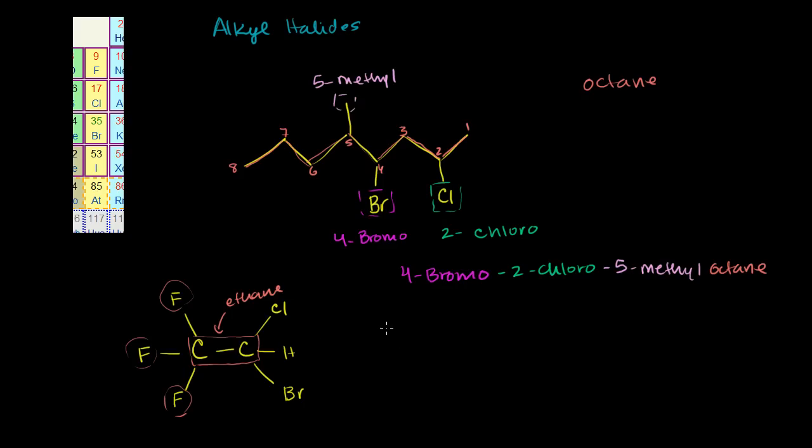We can start at the end that has more things attached to it. So in this case, that's going to be the one carbon, and this is the two carbon. So at one point in our chain, we're going to have one, two, three fluorines. So it's going to be tri-fluoro, and they're all at the one carbon, so it's going to be 1,1,1-trifluoro.